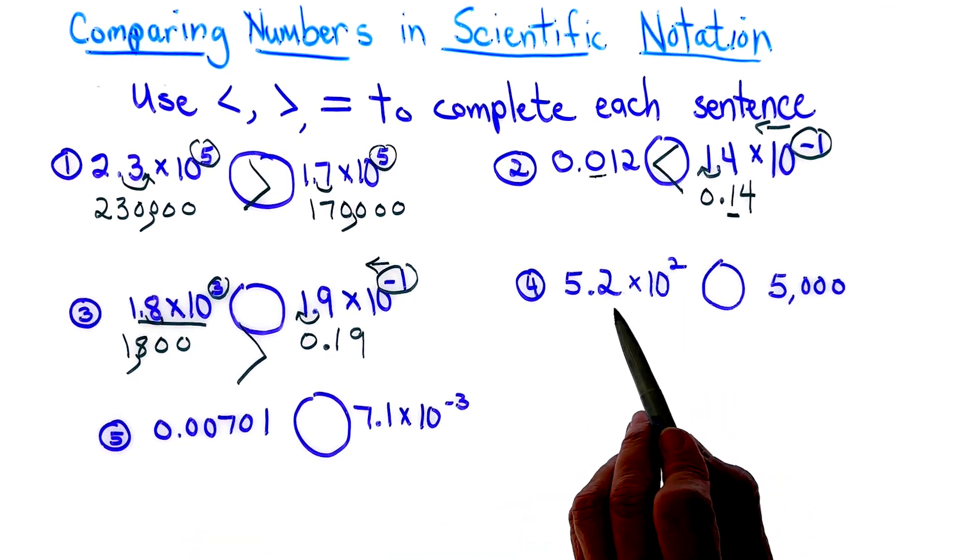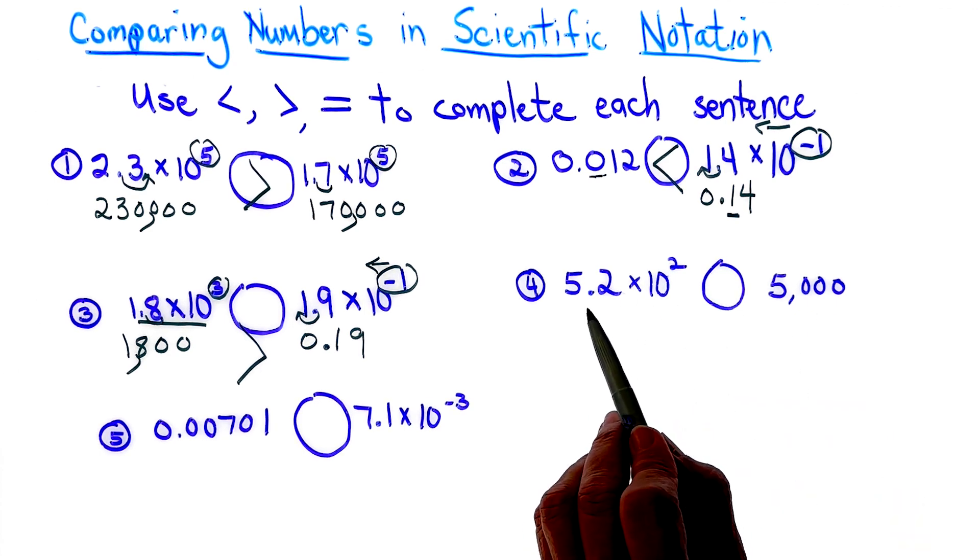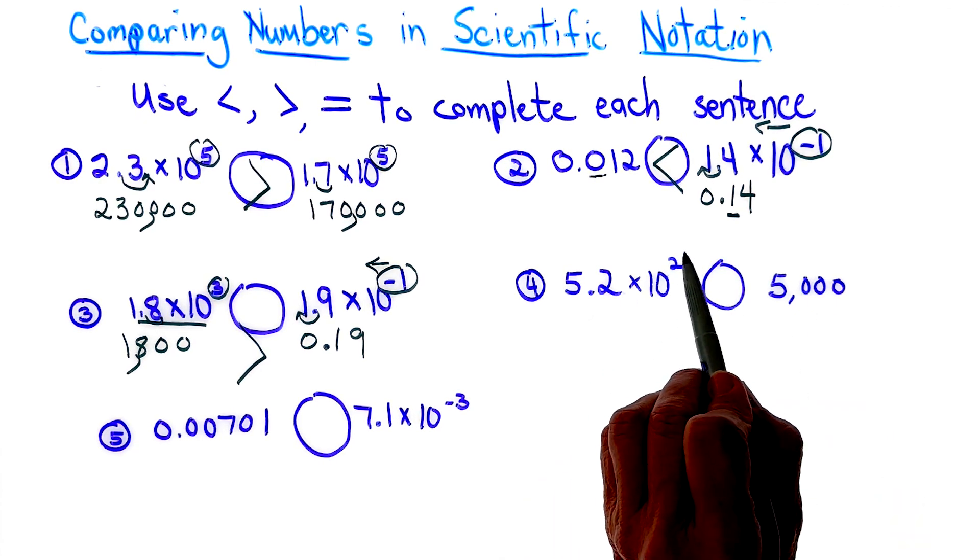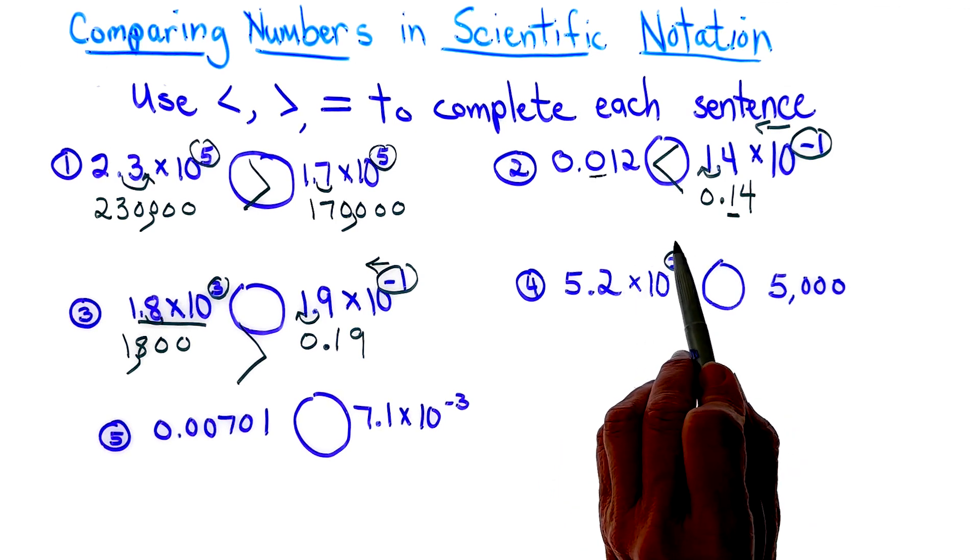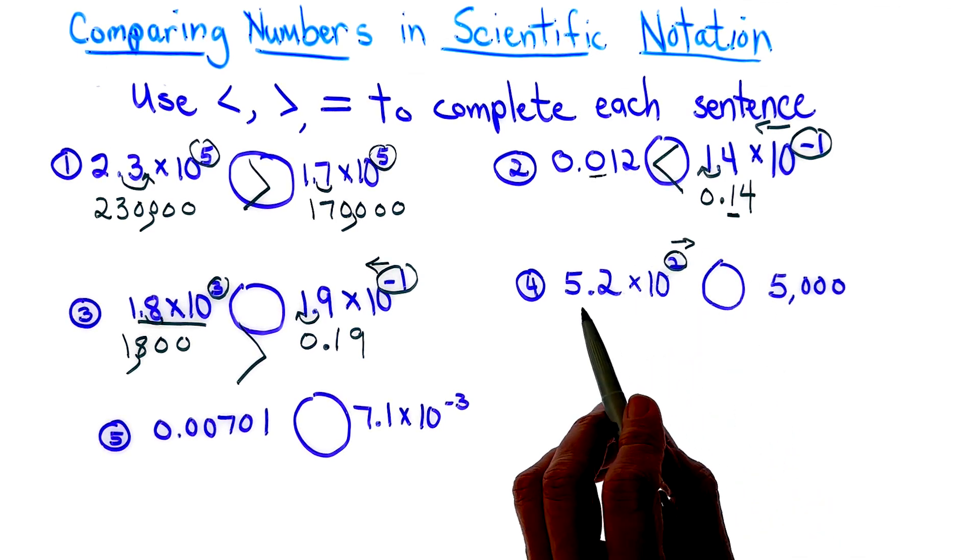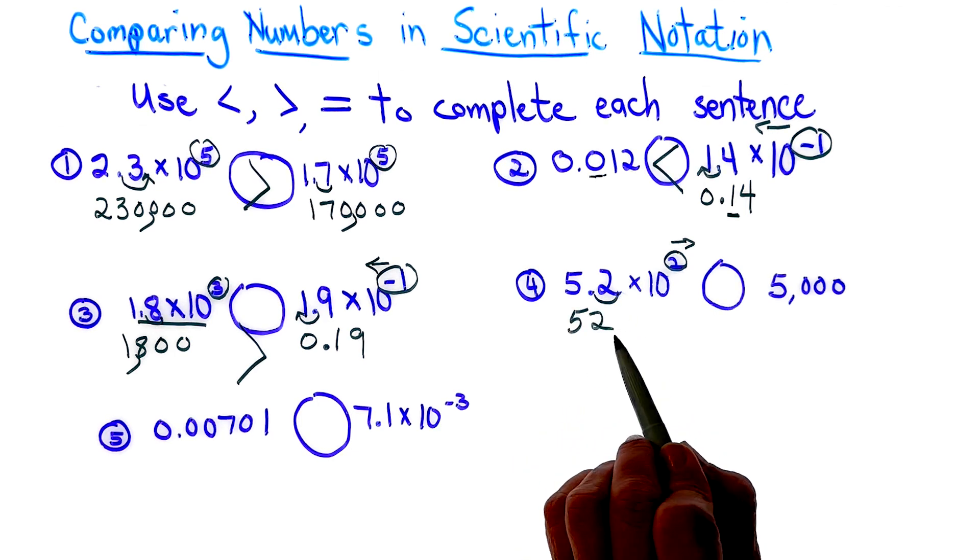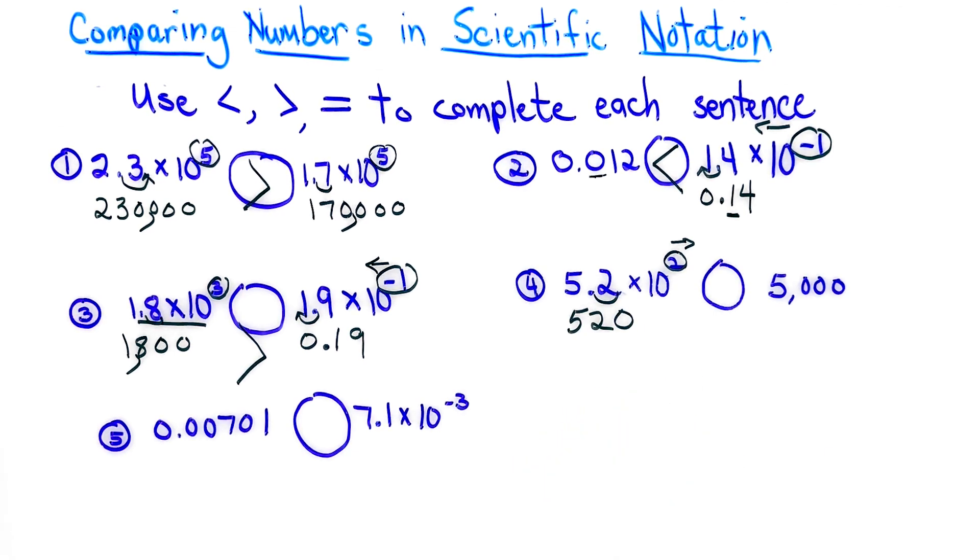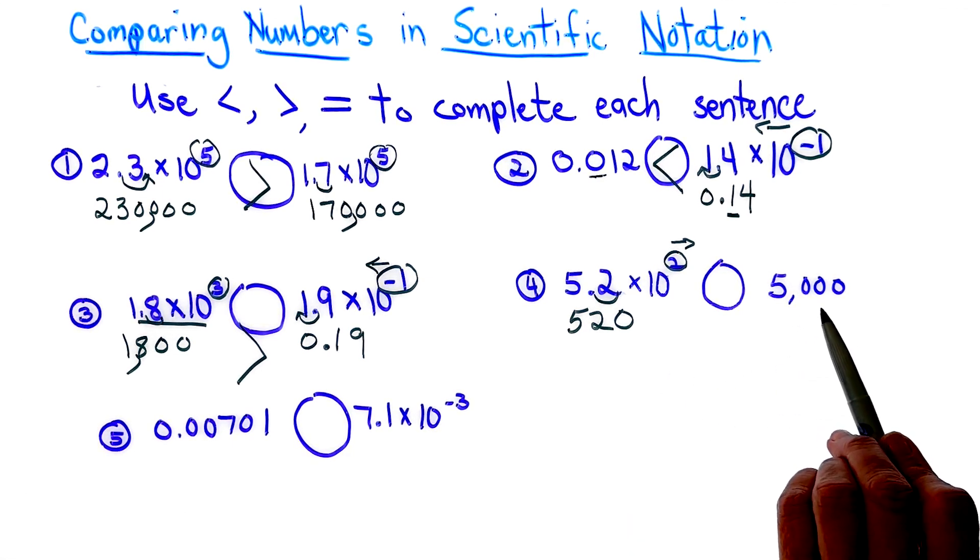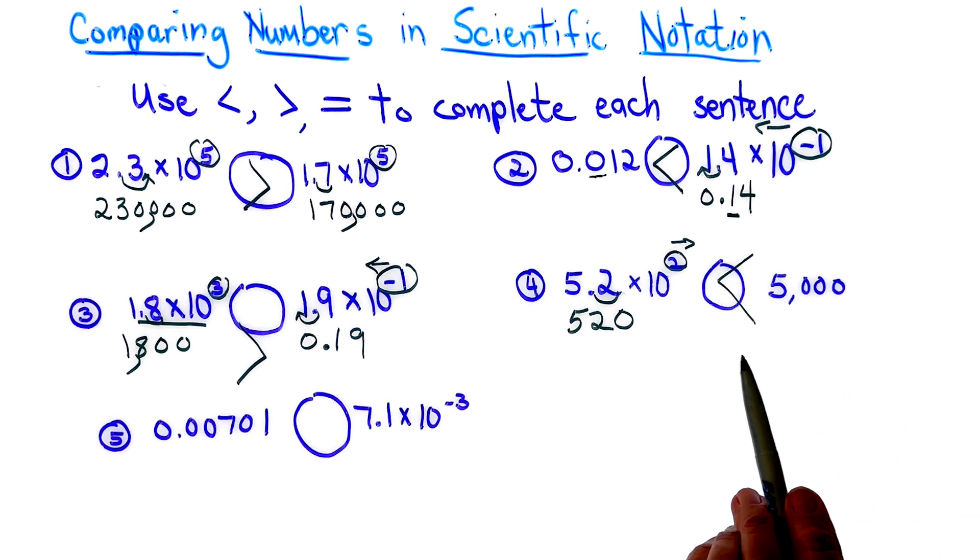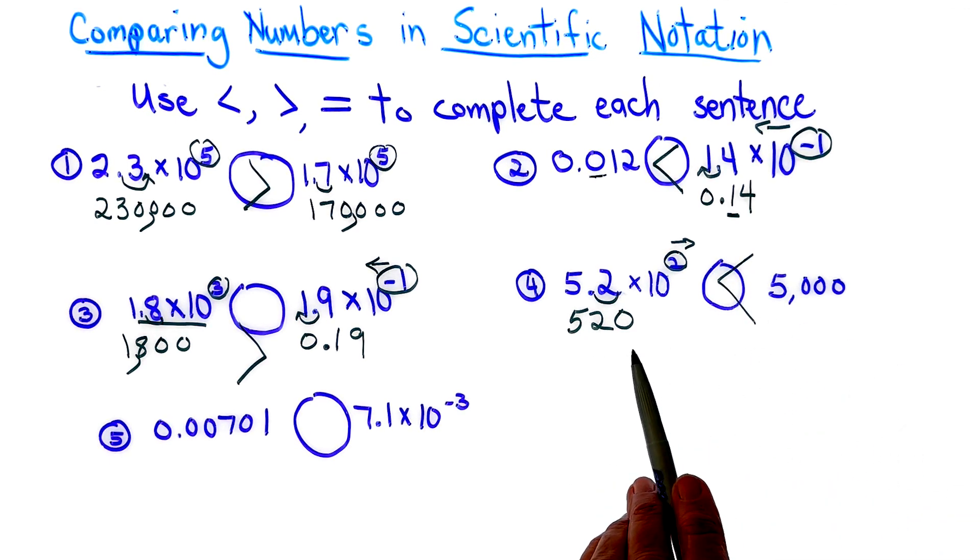We need to do a comparison. So I have 5,000, and I have 5.2 times 10 squared, or 10 to the second power. This is a positive exponent. So we're going to move our decimal point to the right, and we have to go over two. Well, here is one place, and here's the extra one. That's two. So it's 520, and now I have 5,000, and we know that 5,000 is definitely greater than 520. So we must use the less than symbol.